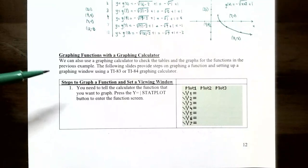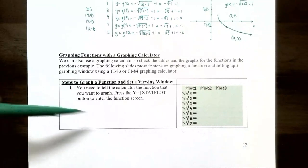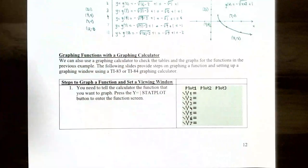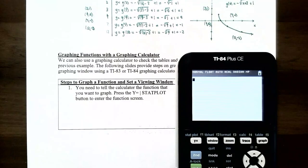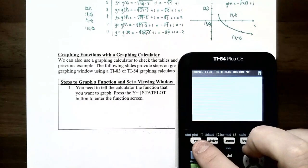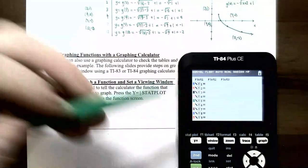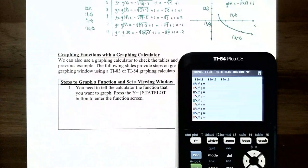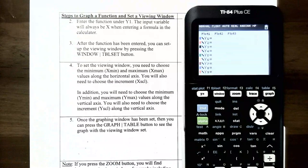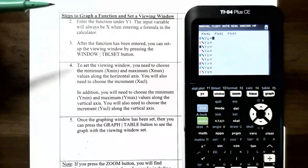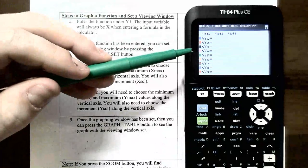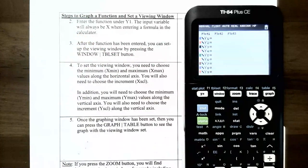To graph a function on a graphing calculator, first go to the Y= screen. Each equation needs to have y solved for first. Enter the function under Y1, Y2, Y3, and so on. The input variable is always x on this screen. The function we're going to graph is the greatest integer function.